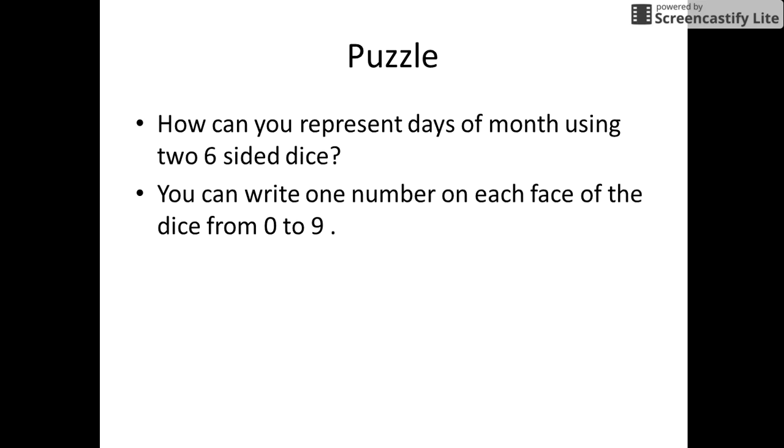You can write one number on each face of the dice, starting from 0 to 9, and you have to represent all the dates from 1st to 31st of any month. Let us take an example to understand this puzzle.